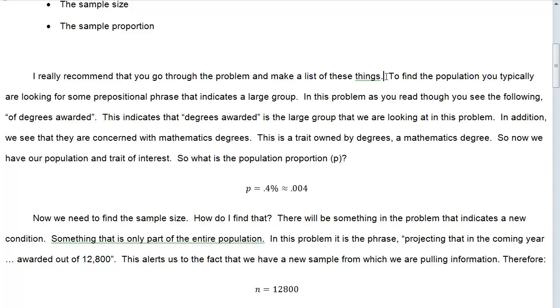To find the population, you typically are looking for some prepositional phrase that indicates a large group. In this problem, you see 'of degrees awarded.' This indicates that degrees awarded is the large group that we are looking at in this problem. In addition, we see that we are concerned with mathematics degrees. This is a trait owned by degrees, a mathematics degree. So now we have our population and trait of interest.